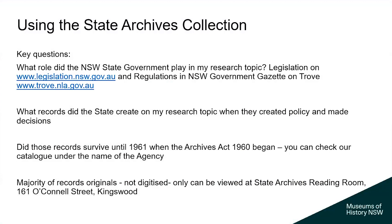The first is the obvious one: what role did the State Government play in your research topic? Did they create any records when they created policy and decisions? And importantly, did those records survive until 1961? Because the Archives Act of 1960 is when we are established. You can check our catalogue under the name of the agency to see what records they have transferred to us. One prime example of material that didn't survive is the principal superintendent of convicts records, which were destroyed in the 1860s and 1870s. Also remember that the majority of the records are not digitised — they can only be viewed at the State Archives reading room at Kingswood.